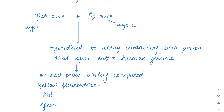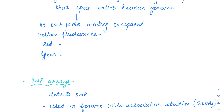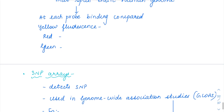In array-based CGH, there is an array with multiple wells containing DNA probes spanning the entire human genome. You add a mixture of test DNA along with normal sample DNA — giving each a different color dye. The normal DNA is tagged with one color dye and the test DNA with a different dye. You pour this mixture into each well, and hybridization occurs between the test DNA and normal DNA with the probes. Based on the type of fluorescence detected at each specific probe, the defect is identified.